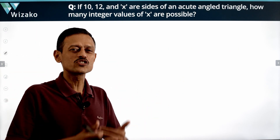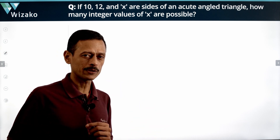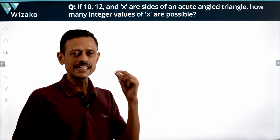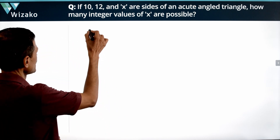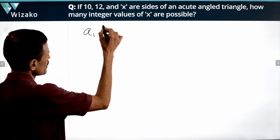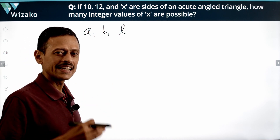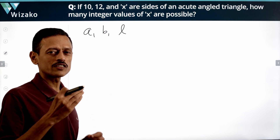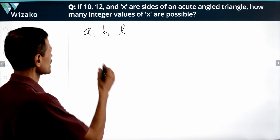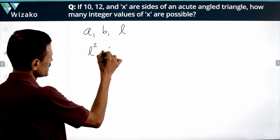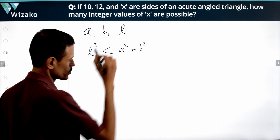The obvious question is: how do we determine that a triangle is an acute angle triangle if its sides are known? If angles are given, it's obvious. But with sides, we use an inequality. If the sides of the triangle are a, b, and L — where L denotes the longest side — then for an acute angle triangle: L² < a² + b².